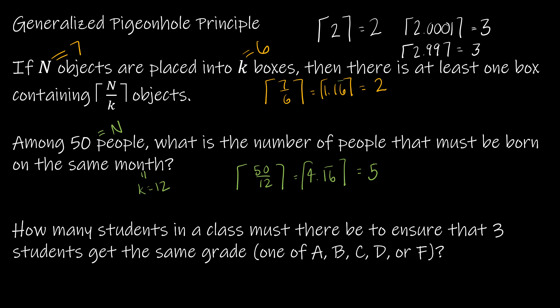If we have 50 people, then the number of people that must be born on the same month is 5. Now it could be more than that, but we're saying worst case scenario, 5. Now the next question, a little bit trickier, still the same pigeonhole principle, but a little bit more complicated.